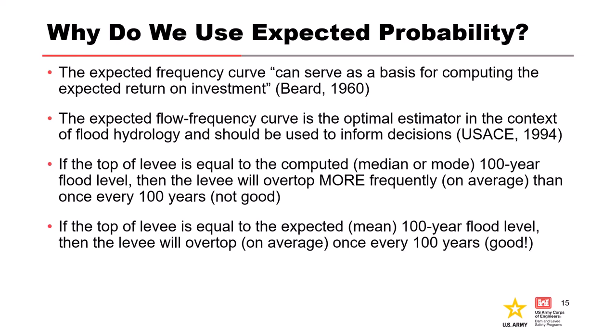Now let's look at an example with a levee. If the top of the levee is equal to the computed median or one percent flood level, that levee will actually overtop more frequently on average than once every 100 years like we would expect. If the top of the levee is equal to the expected or mean 100-year flood level, then the levee will overtop on average every once and every 100 years, which is good. That's how we intend to design. And that's actually how flood insurance rates work.